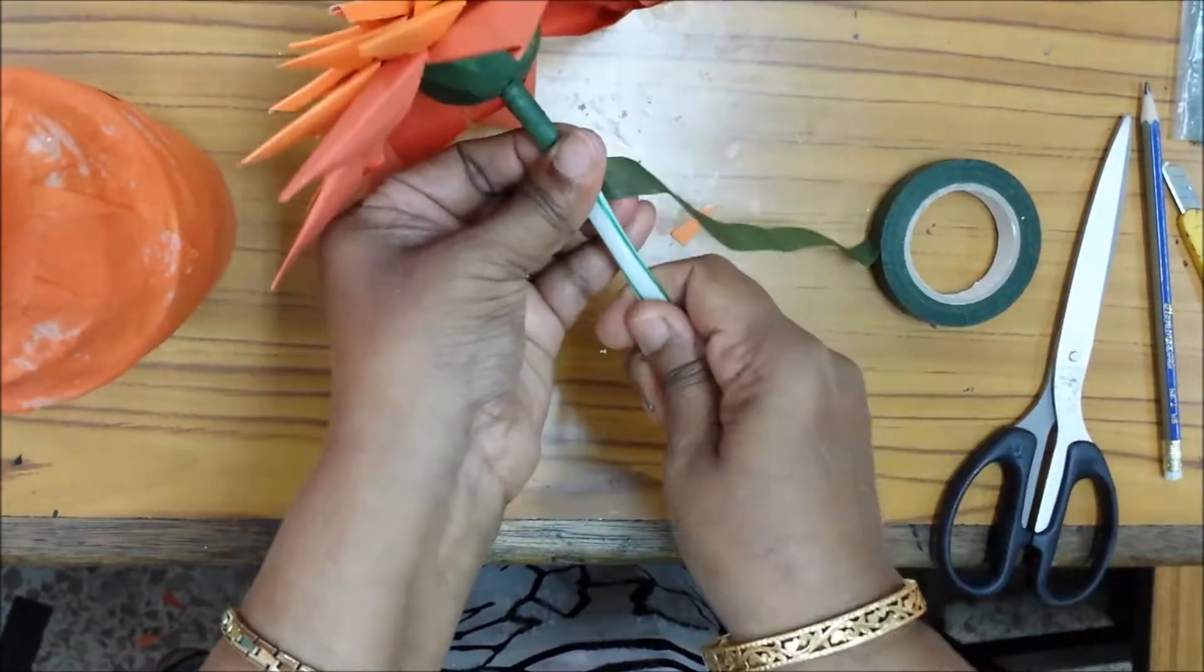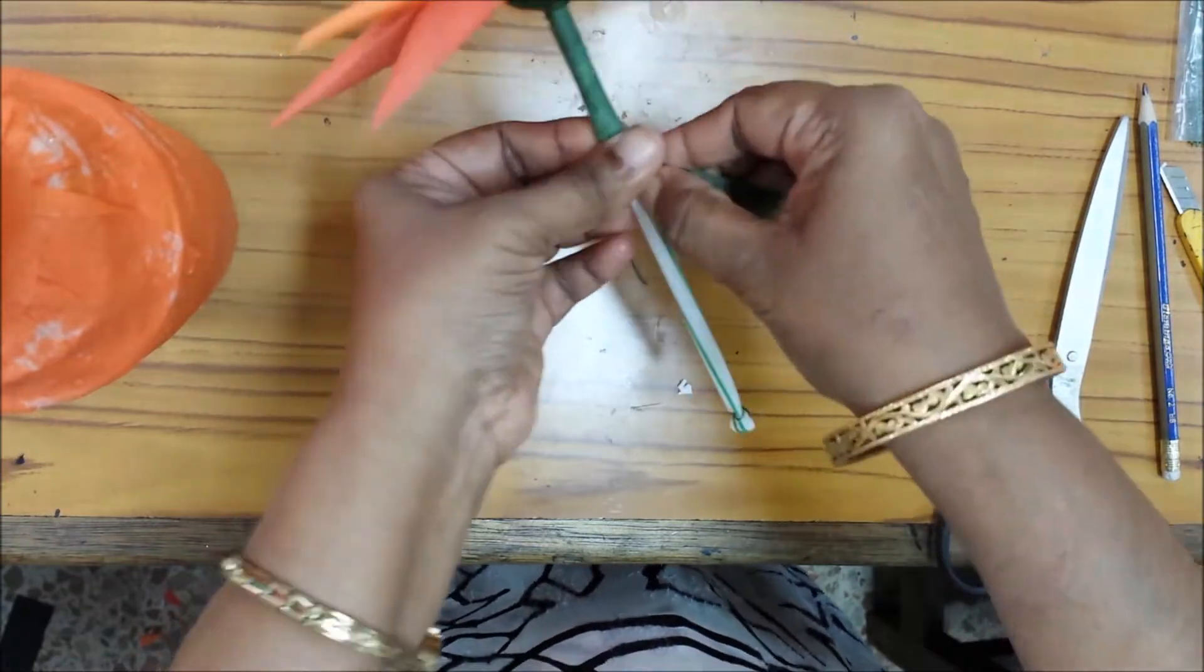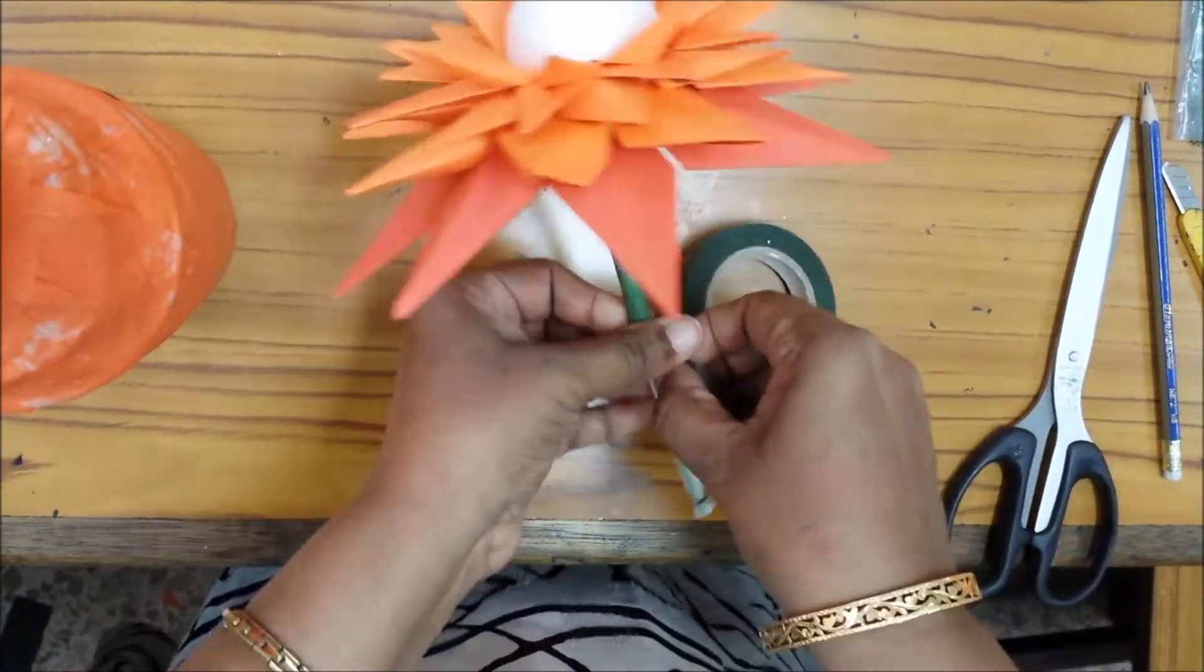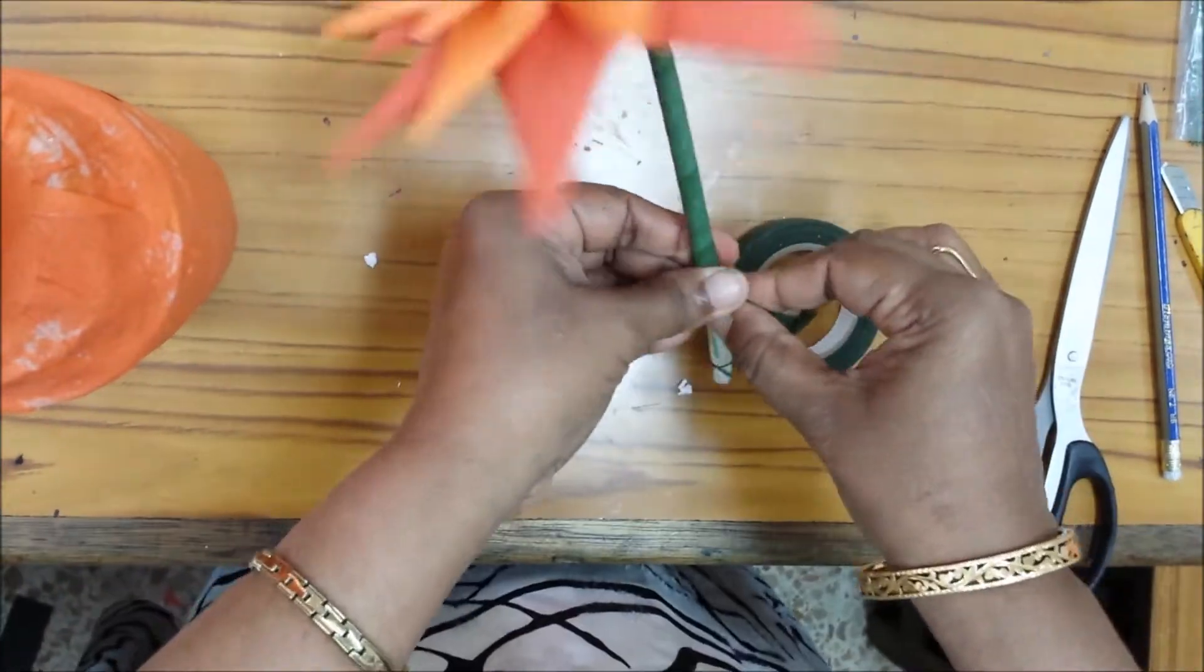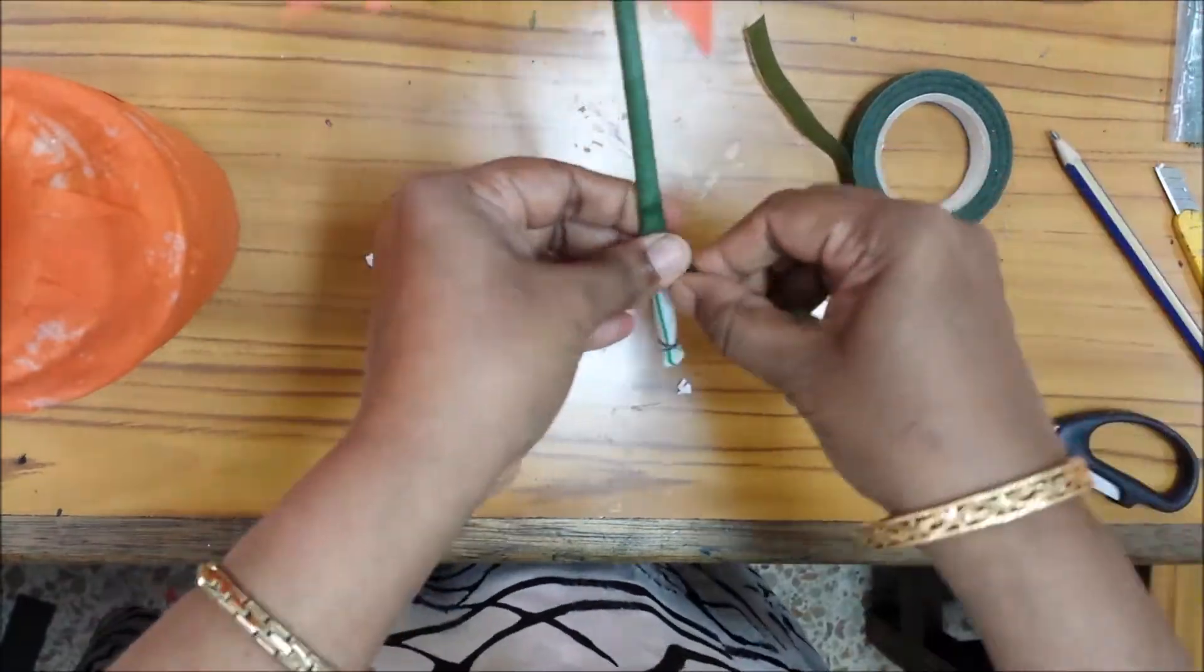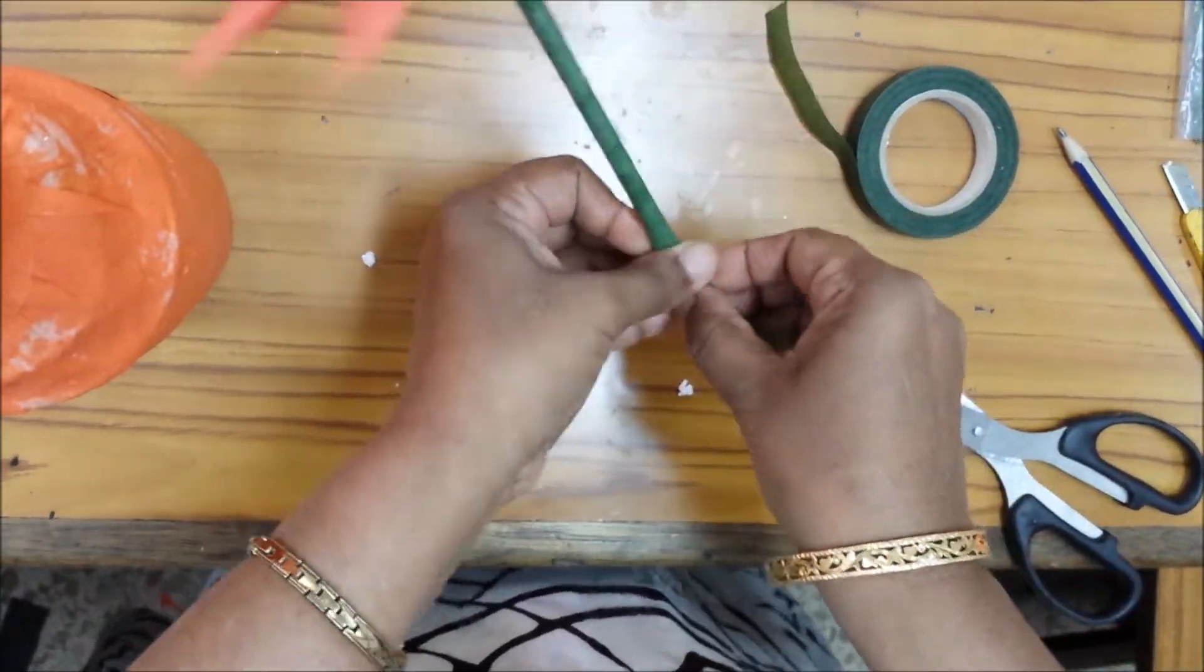Once you finish, means after the front, the center thermocol ball, decorate with glitters, any glitters your wish. I am using here golden and silver glitters.